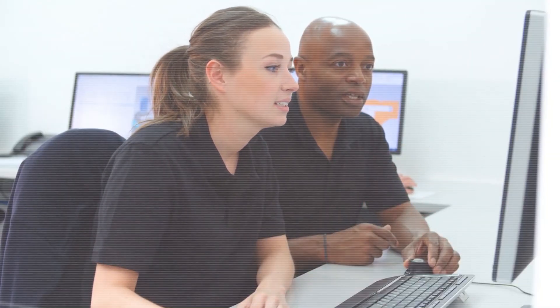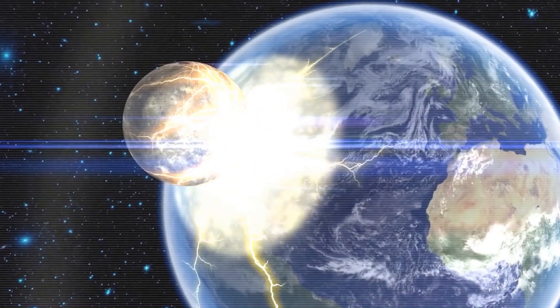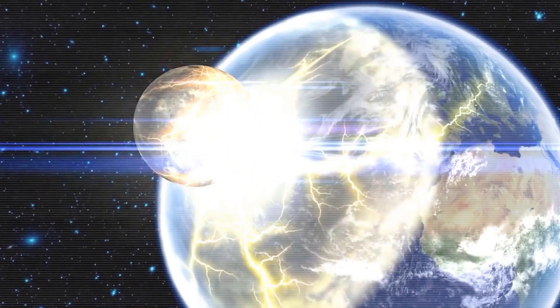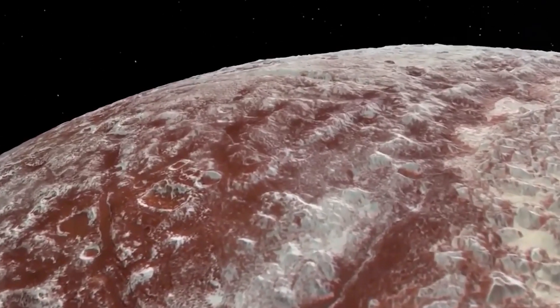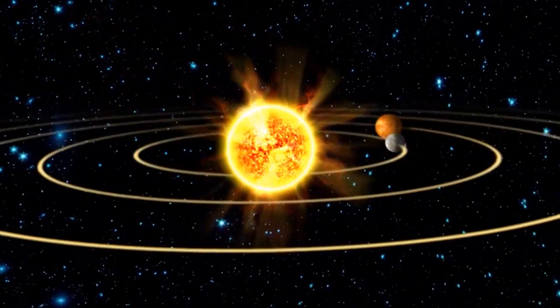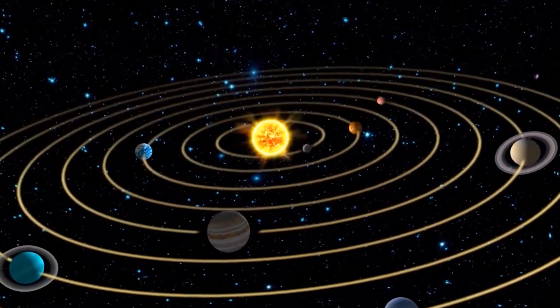In the vast space out there, TRAPPIST-1 is like a group of seven Earth-sized planets. They follow certain patterns because of how they pull each other with gravity, and sometimes this could lead to them bumping into each other. But surprisingly, even with their busy moves, these planets manage to avoid crashing into each other for now.